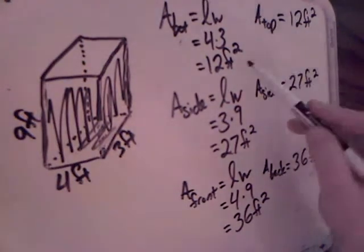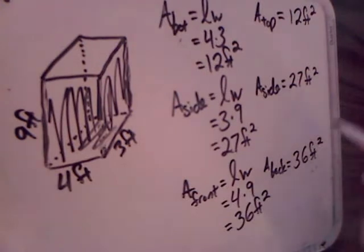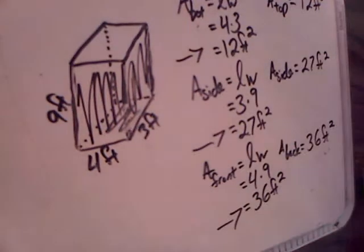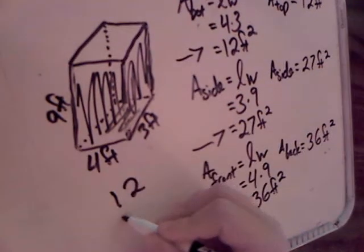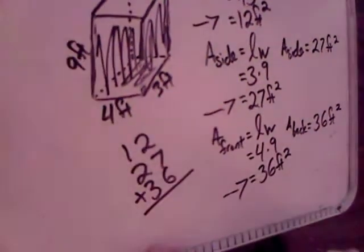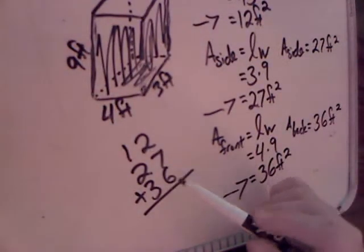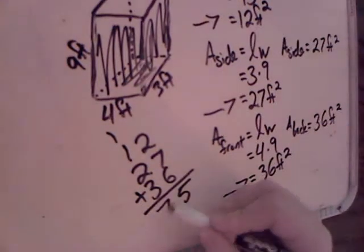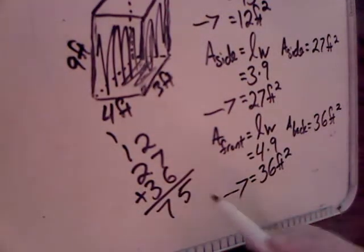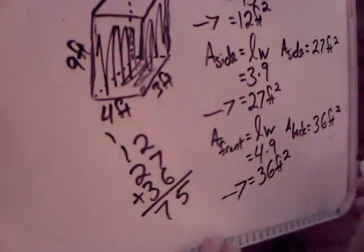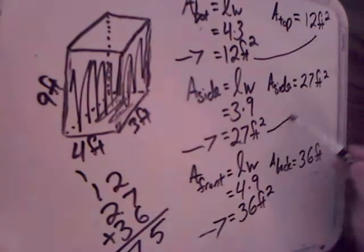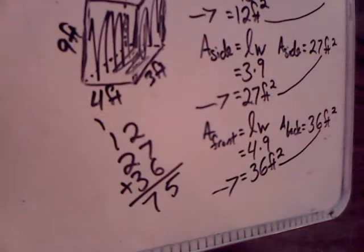Now all I have to do is add up all of these numbers. Rather than adding all six, I'm just going to look at the three we originally found — the bottom, the side, and the front — and add 12 plus 27 plus 36. 6 plus 2 is 8, 8 plus 7 is 15, carry the 1. 2 plus 3 is 5, plus 2 is 7. So right now we have a surface area of 75 feet squared. But since the top, other side, and back are the same, I'm just going to double the 75.